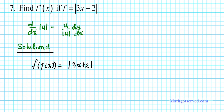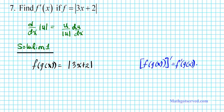We know what the chain rule is. If we want to find the derivative of f of g of x, then f of g of x prime is equal to f prime of g of x — the derivative of the outer function evaluated at the inner function — multiplied by the derivative of the inner function.